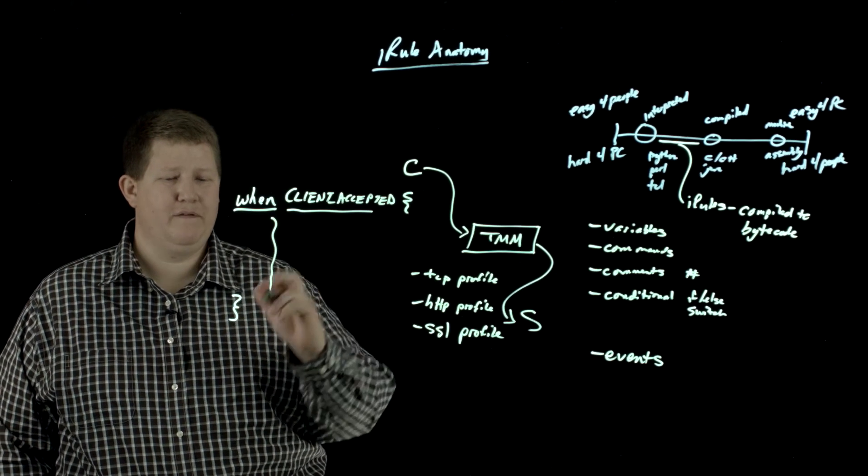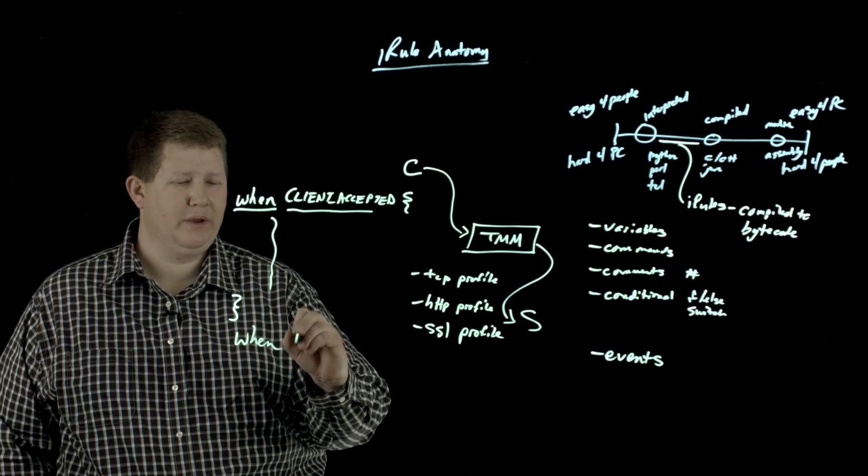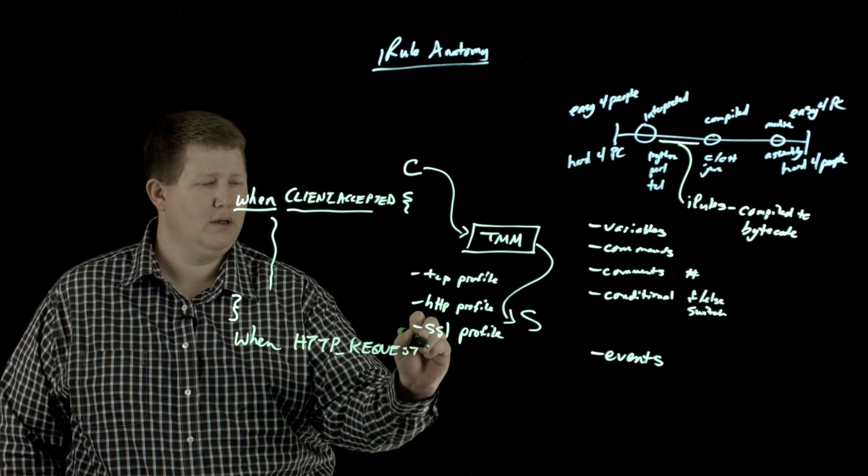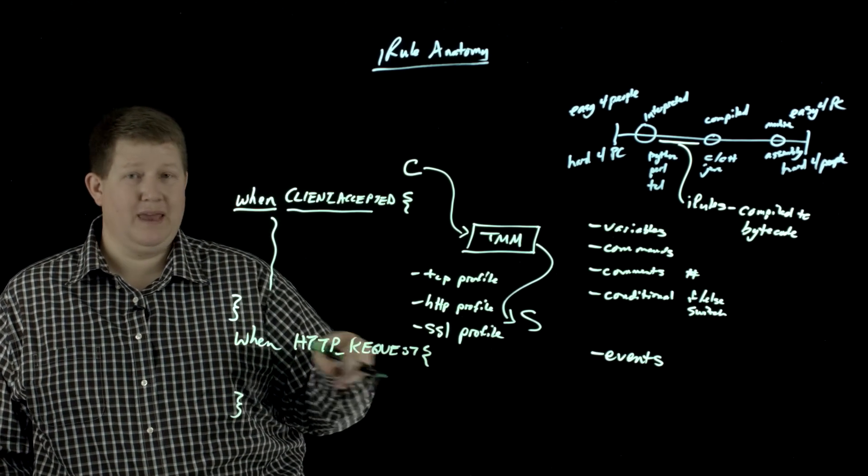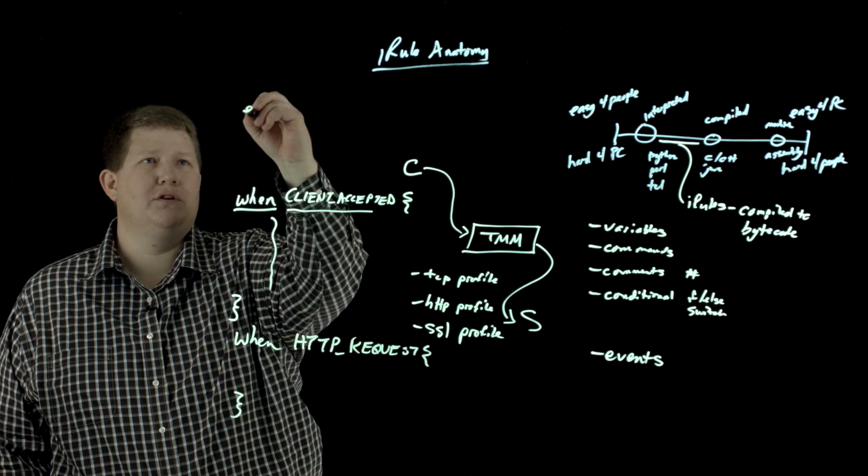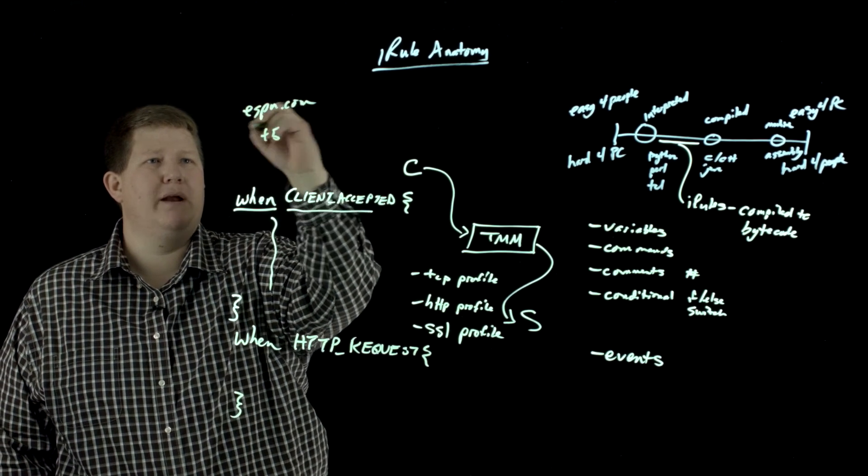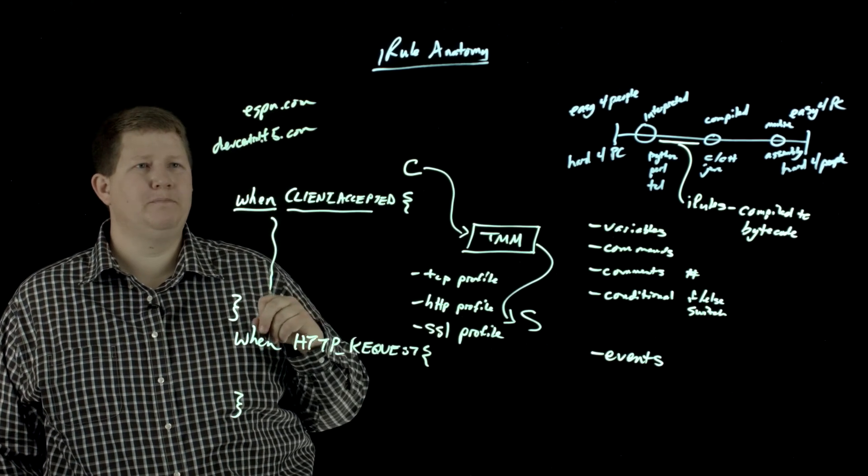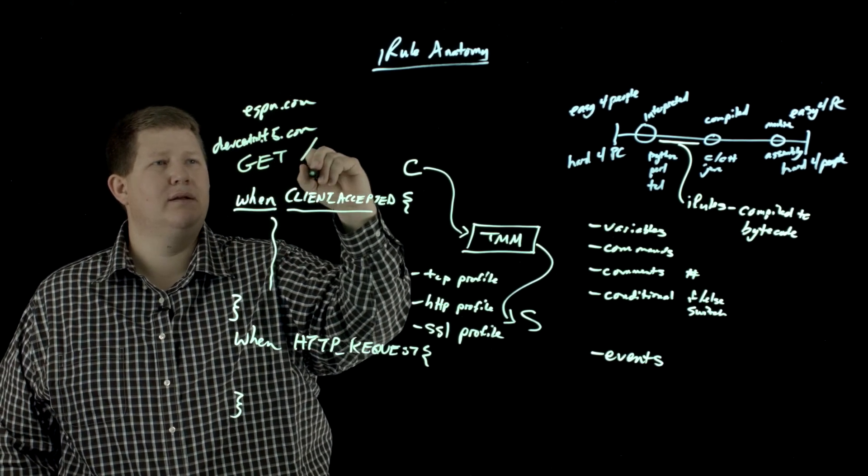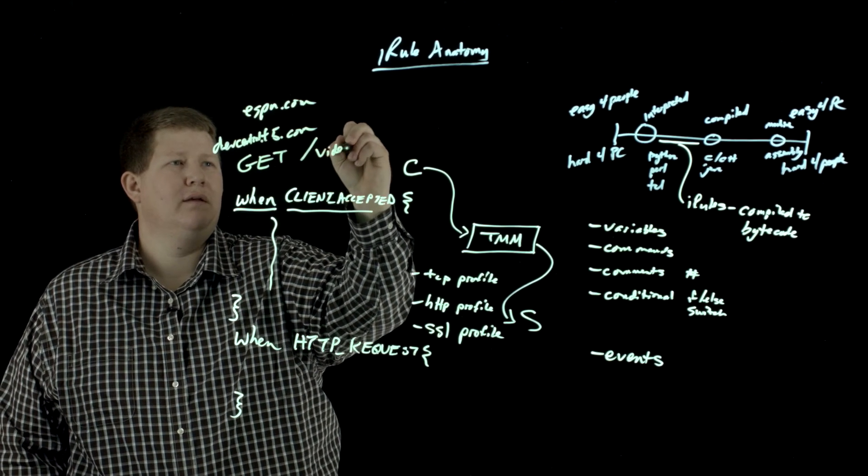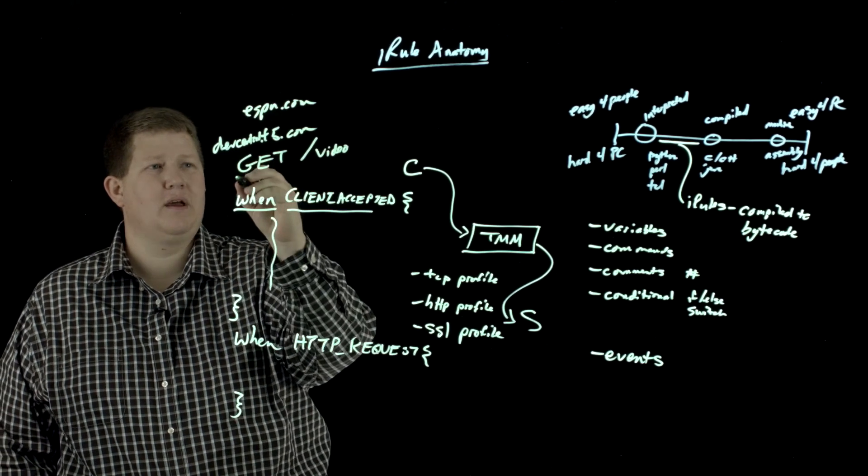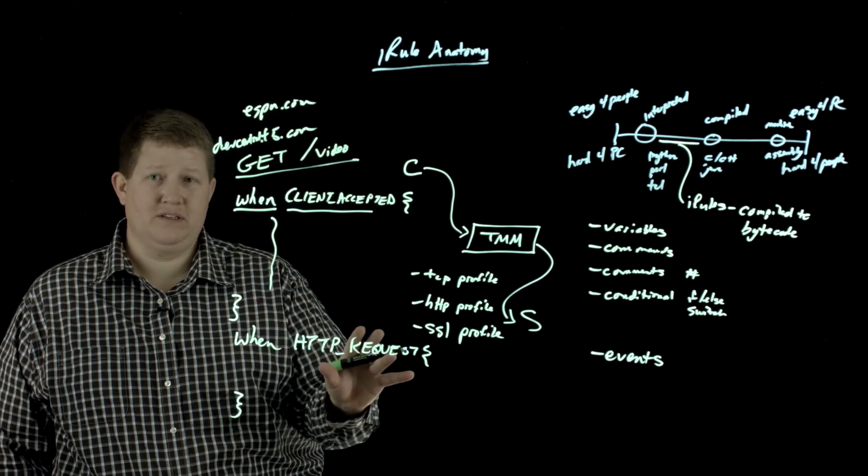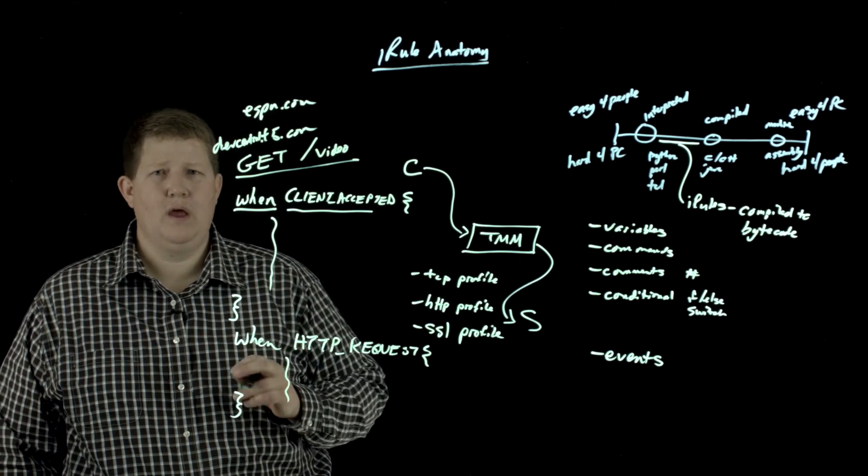Within an iRule you can have more events as more events fire. So we could say, because we have HTTP profile, we can do when HTTP_REQUEST. And then within the GET request - so if you're on the wire, you're in your browser, you go to espn.com or even better you come to devcentral.f5.com to watch this video - there's going to be a GET and then whatever the URL is. Let's say /video. So when this comes in on the wire and the client handshake has already happened, the next request in this GET /video, that's when this HTTP_REQUEST event fires.